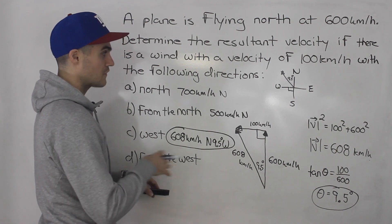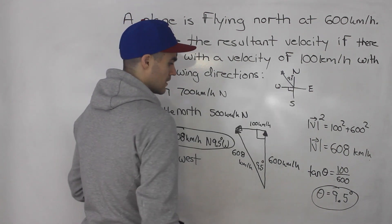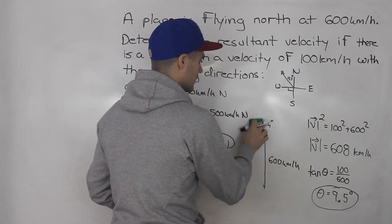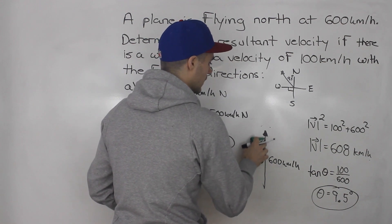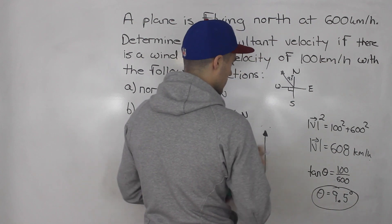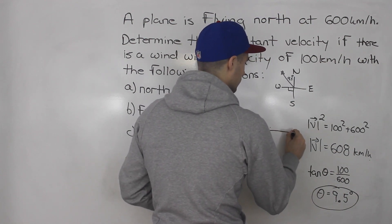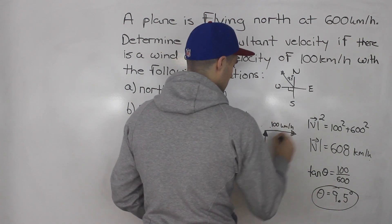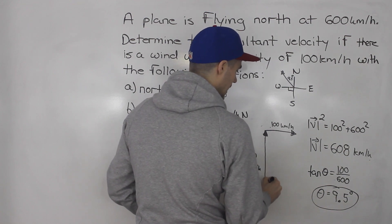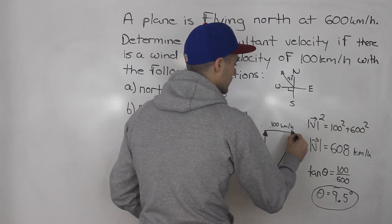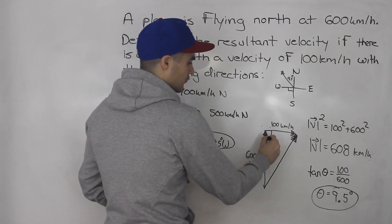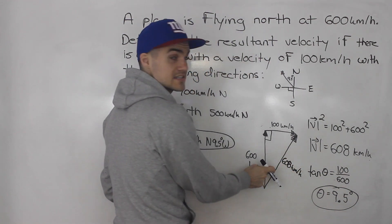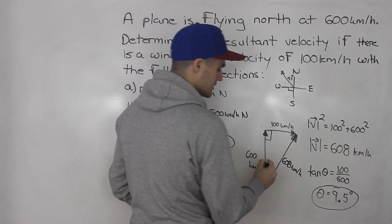For part D, what if the wind is blowing from the west? That means the wind is going in the opposite direction — toward the east. The plane is still going 600 kilometers per hour north, but the wind is now 100 kilometers per hour toward the east. Notice this is pretty much the same triangle as before — still a 90-degree right triangle. So Pythagoras still gives 608 kilometers per hour, and inverse tangent of 100 over 600 still gives 9.5 degrees.